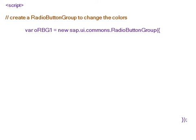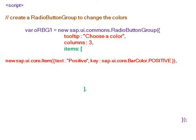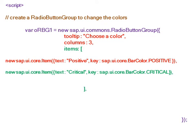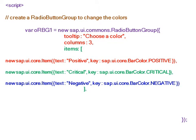Now we create a radio button group to change the color of the progress indicator dynamically. The constructor for the new radio button group includes a tooltip 'choose a color', columns set to three, and items in the group: the first with text 'positive' and positive color, the second with text 'critical' and critical color, and the third with text 'negative' and negative color.